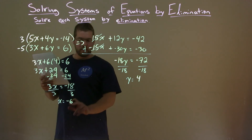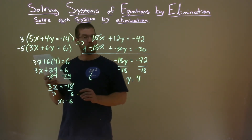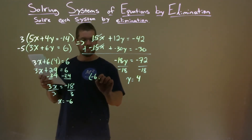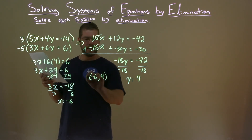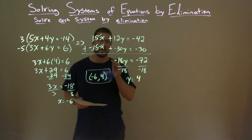So we have our x value and our y value. Let's write it as a coordinate point: negative 6 comma 4, and that is our final answer.